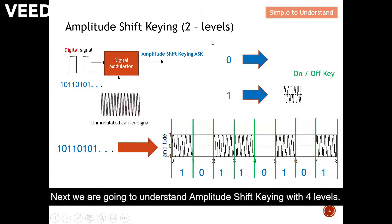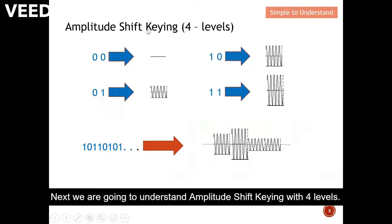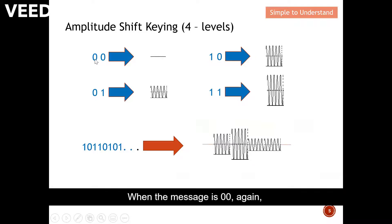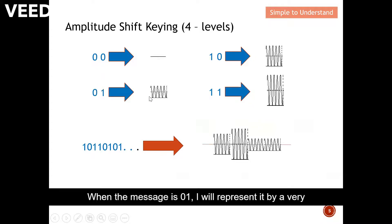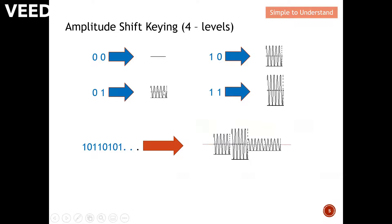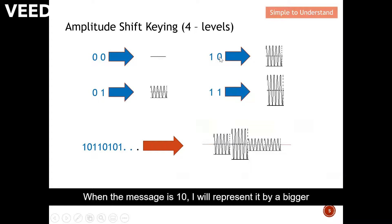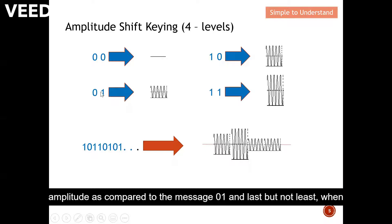Next, let's understand amplitude shift keying with four levels. When the message is 00 I represent nothing; when the message is 01 I represent it by a very small amplitude; when the message is 10 I represent it by a bigger amplitude compared to 01; and when the message is 11 I represent it by the largest amplitude.